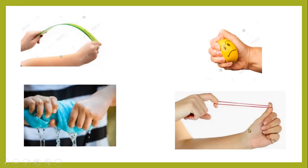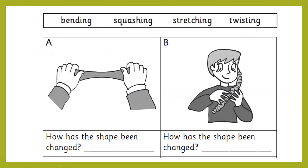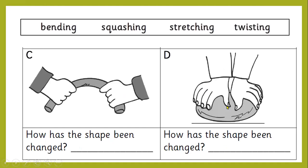Here are four questions: A, B, C, and D. Look at the two hands and look at the action — what force has been done? How has the shape been changed? By stretching — very good. Now look at this picture: this is twisting, bending, and squashing.